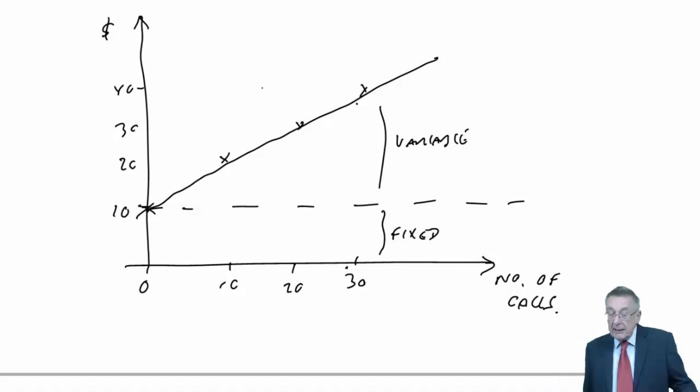Alright, well that's fine. And certainly, if the telecom company invoiced you, you would expect it to be precise like that. It's a fixed ten dollars a month and then a dollar a call on top. But there are plenty of other costs where it wouldn't be quite as precise. Suppose instead I was looking at electricity based on the units produced.